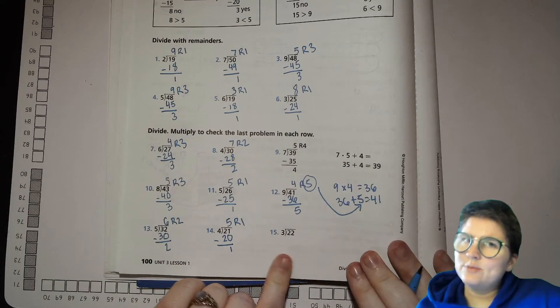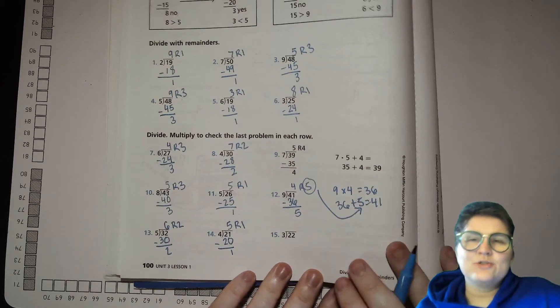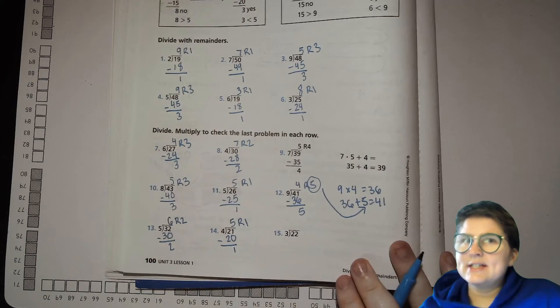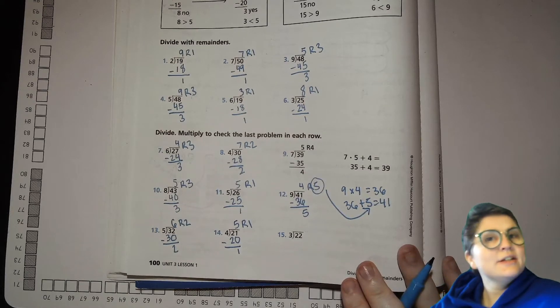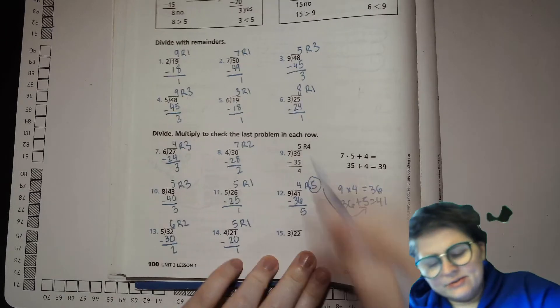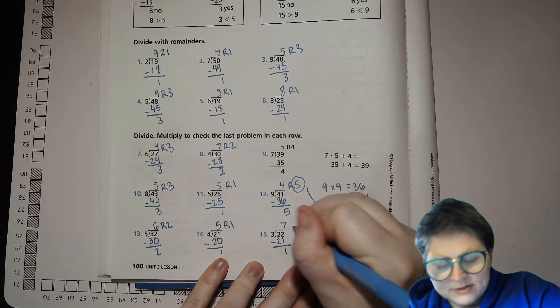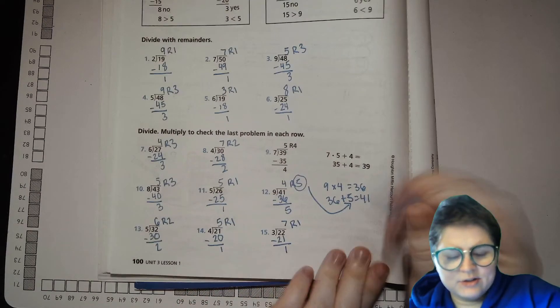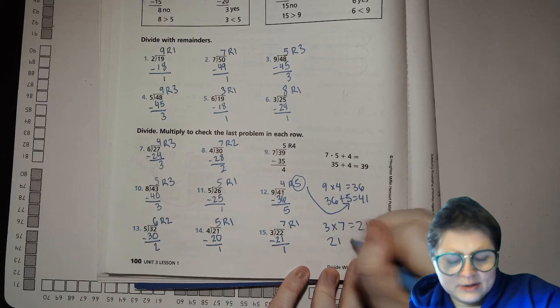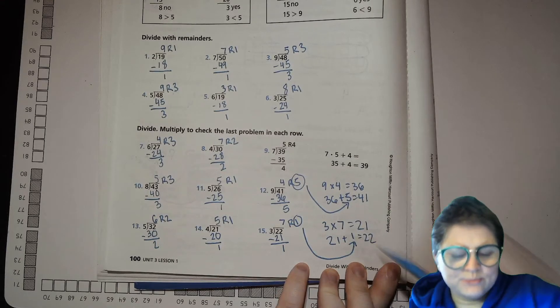Last one. If you haven't done one on your own, give this one a shot. You can do it. 3 times what is 22? 3 times 5 is 15. 3 times 6 is 18. 3 times 7 is 21. 3 times 8 is 24. That's too high. So, you have to go 3 times 7, 21. Difference is 1, 1 left over. Now, we're going to do the checking. 3 times 7 equals 21. 21 plus remainder equals 22.